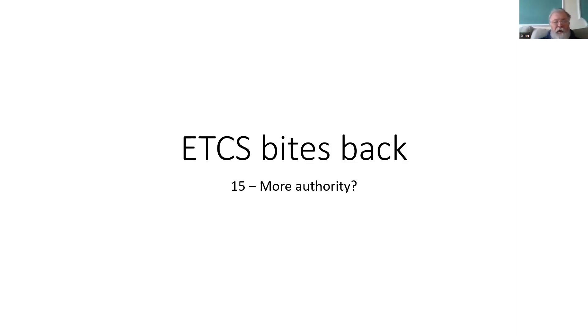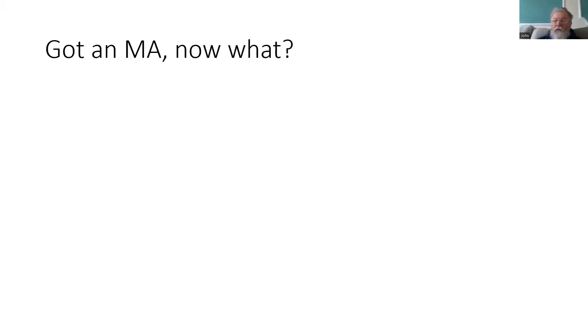So we've seen how a movement authority is issued to an onboard in both levels 1 and 2, 3 and R. So the train has now got a movement authority. Now what happens?